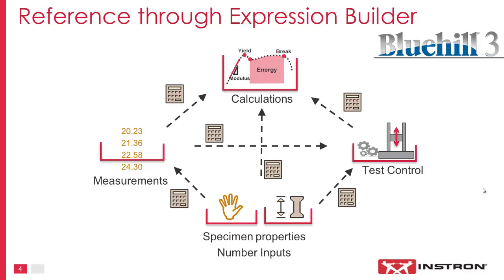The specimen properties and number inputs are made available to configure virtual measurements and test controls, and they're also made available in calculations. Calculations can use both physical and virtual measurements as well as specimen properties, number inputs, and test control settings to set up a user-defined calculation or to tweak an existing calculation in the library. This really brings everything together to show the power of referencing using the expression builder.